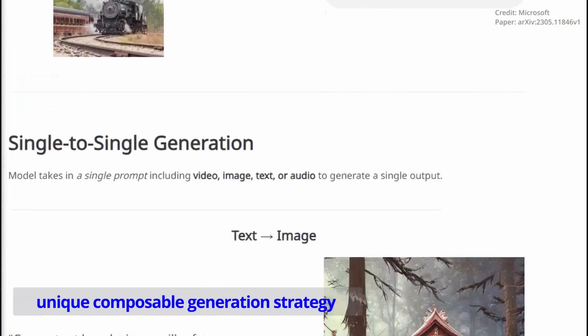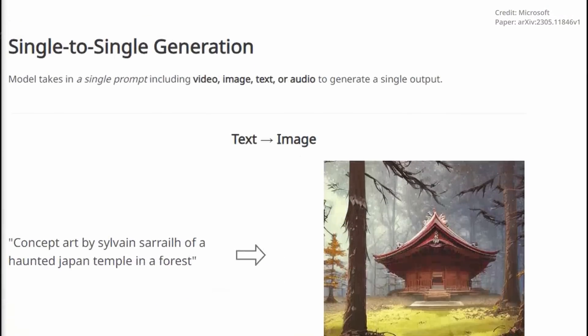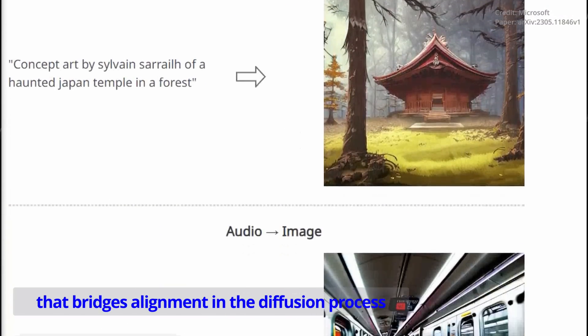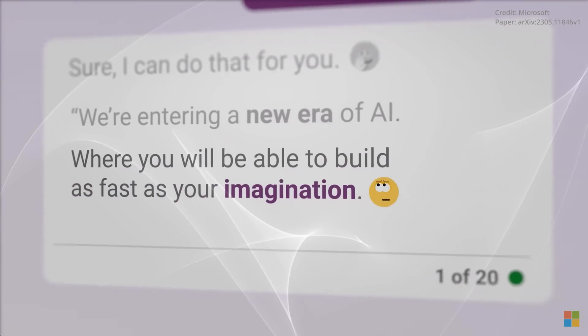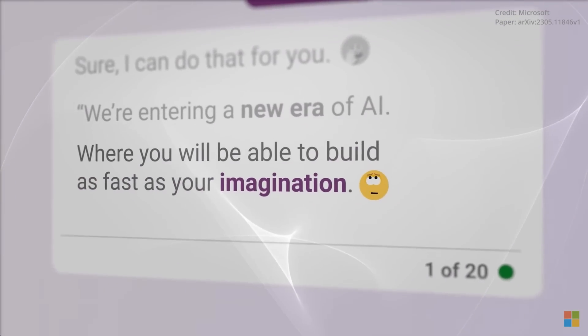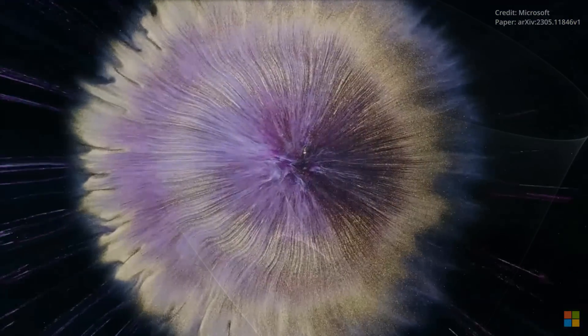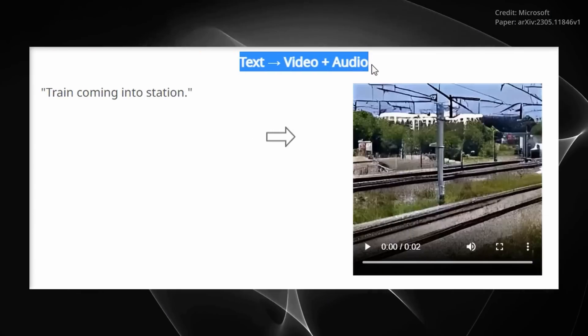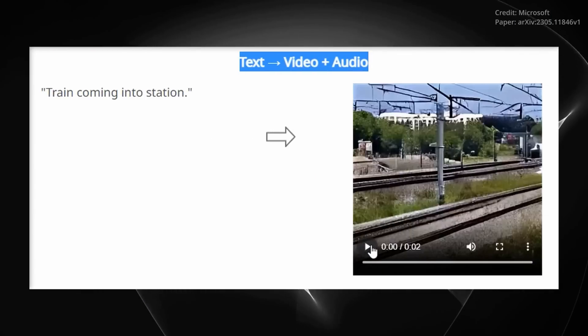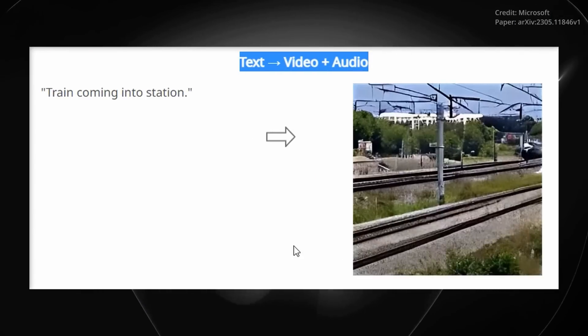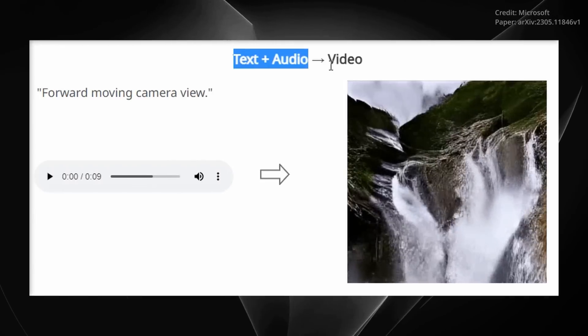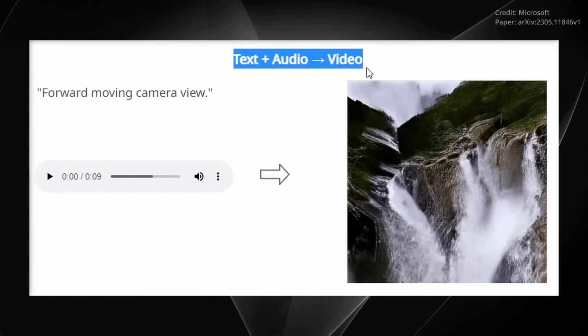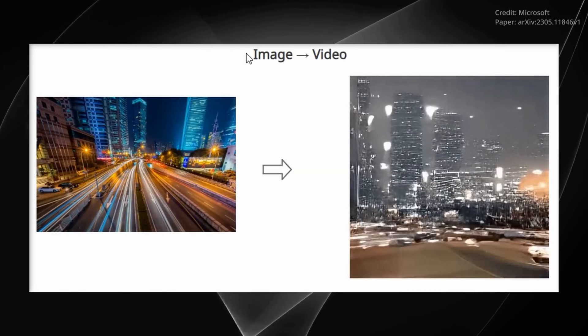CODI employs a unique composable generation strategy that bridges alignment in the diffusion process, facilitating synchronized generation of intertwined modalities, such as temporally aligned video and audio. This approach allows CODI to condition on any combination of inputs and generate any set of modalities, even those not present in the training data.